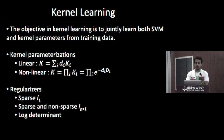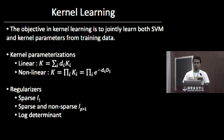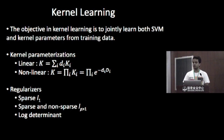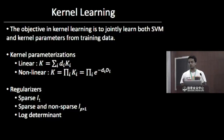The objective in kernel learning is to jointly learn both the SVM and kernel parameters from training data. Two important factors are kernel parameterization — combining base kernels linearly gives a convex optimization problem, or nonlinearly for a non-convex problem. The second factor is the kind of regularization used, which decides the sparsity of the solution — the number of kernel weights which go to zero.